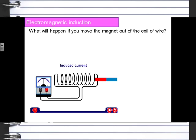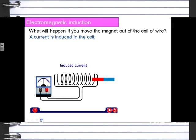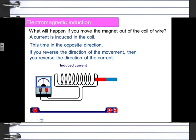When you move the magnet out of the wire, the current moves in the opposite direction. So the current is induced in the coil in the opposite direction, and if you reverse the direction of movement, you reverse the direction of the current.